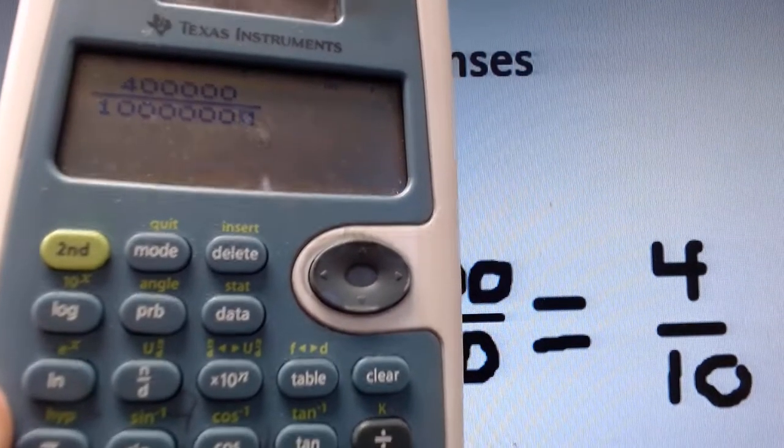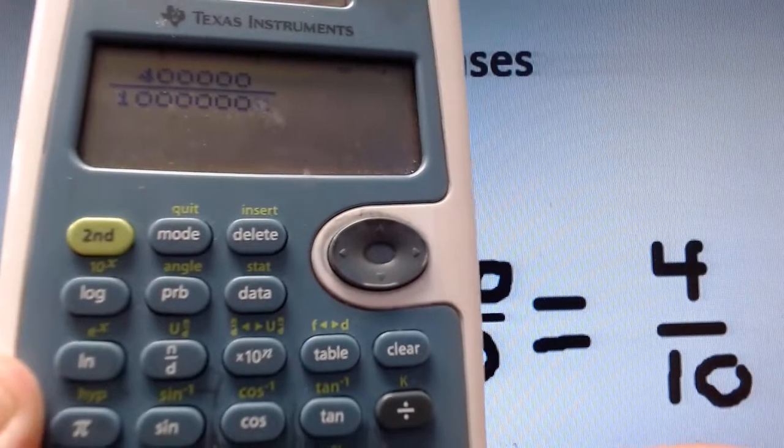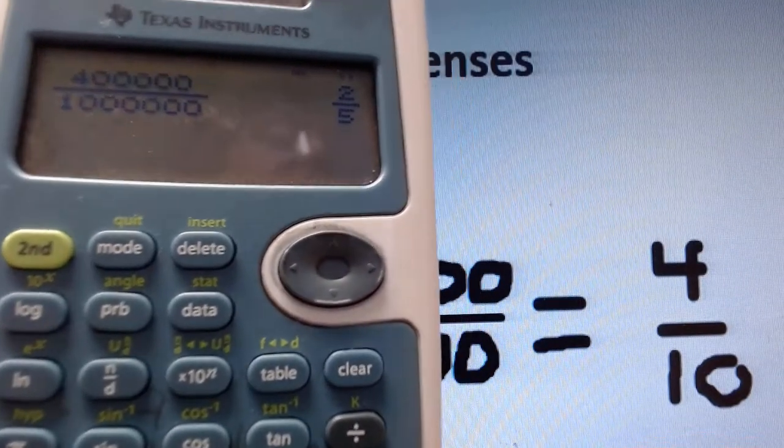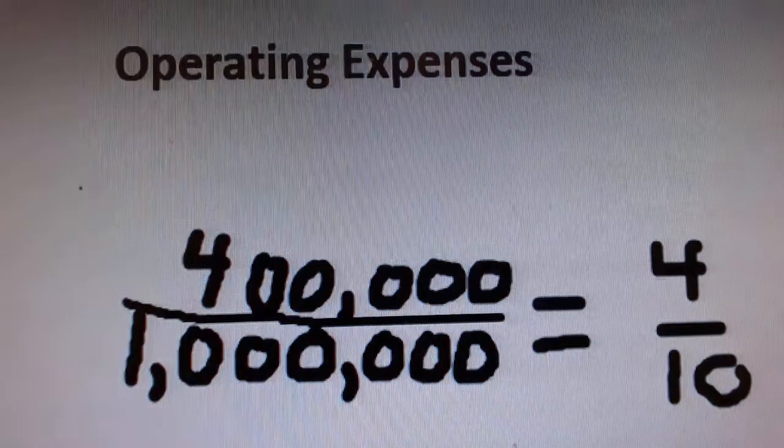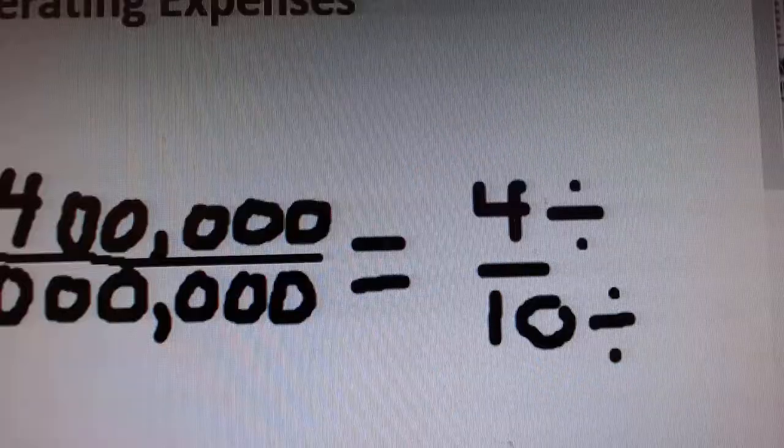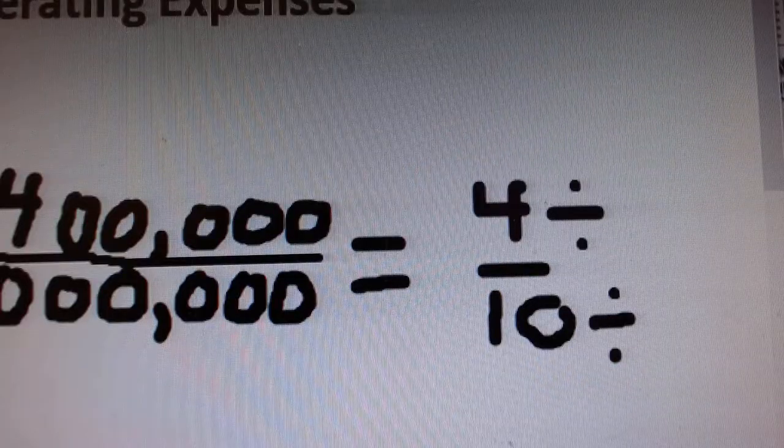So 400,000 over a million reduces down to two-fifths. Or if you divide both the top number and bottom number by two, you'll get two-fifths.